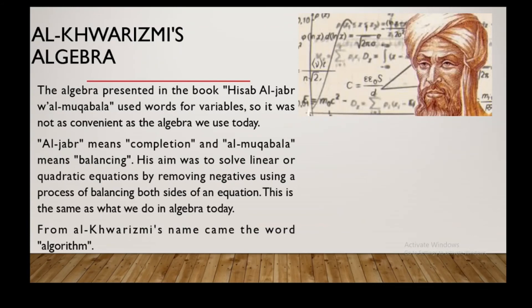The algebra presented in the book Hisab Al-Jabr Wal-Muqabala used words for variables, so it was not as convenient as the algebra we use today. Al-Jabr means completion and Al-Muqabala means balancing. His aim was to solve linear or quadratic equations by removing negatives using a process of balancing both sides of an equation — the same as what we do in algebra today.